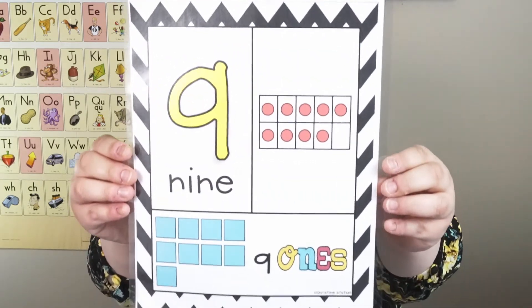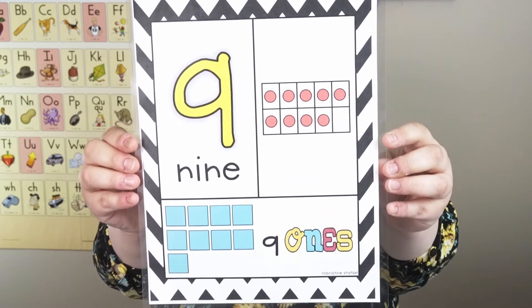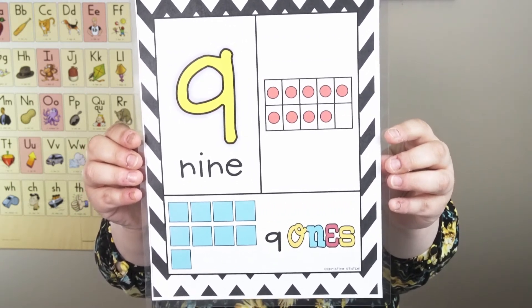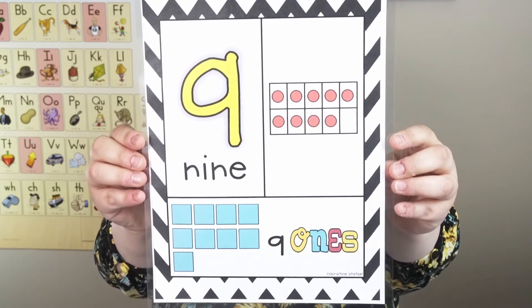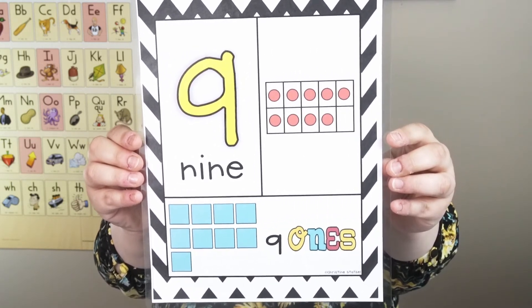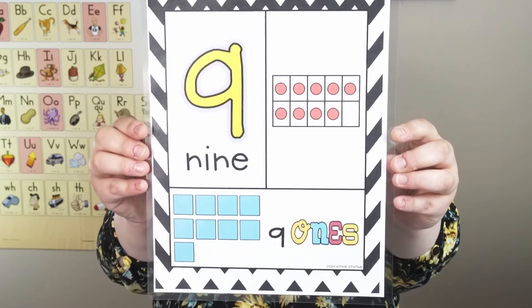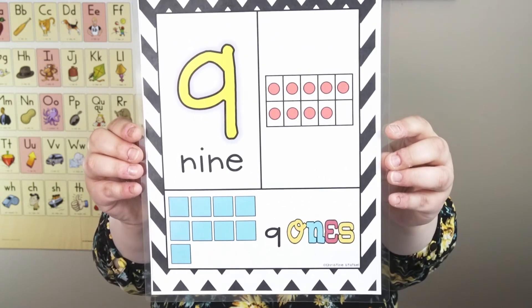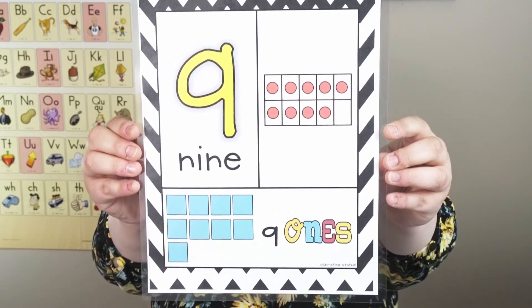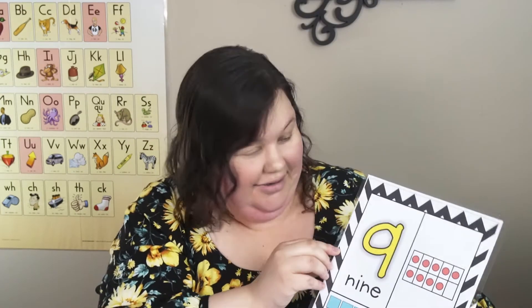Let's try this one. What's this number? We can sound it out, or we can count the red dots, or we can count the place value cubes at the bottom. What number is this? Did you say nine? You got it — that's right.